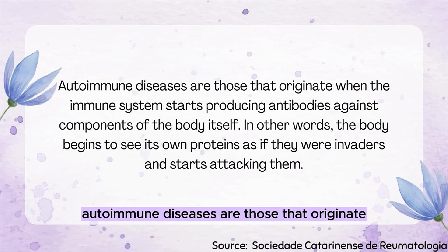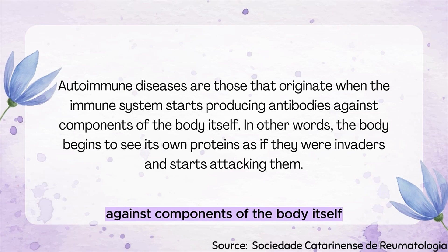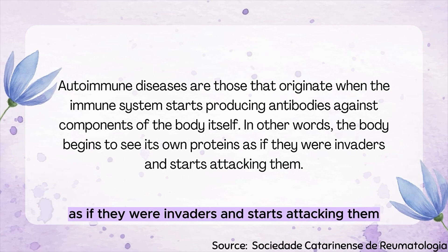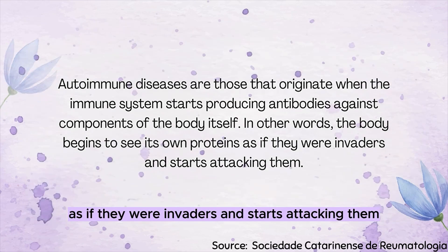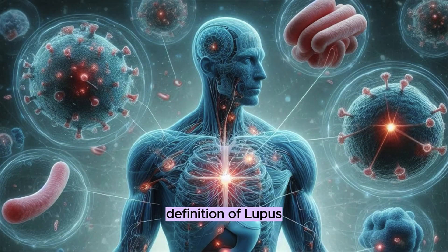Autoimmune diseases are those that originate when the immune system starts producing antibodies against components of the body itself. In other words, the body begins to see its own proteins as if they were invaders, and starts attacking them.